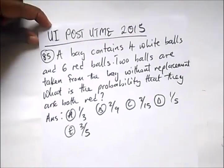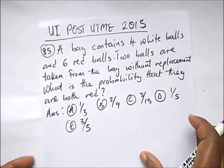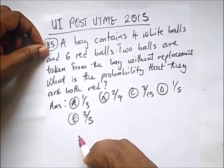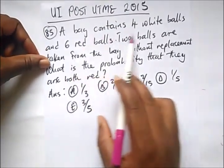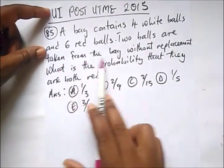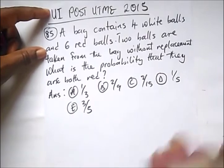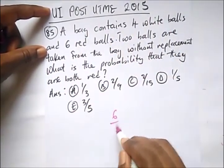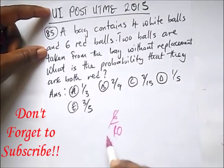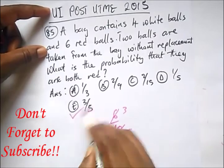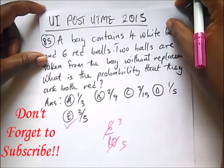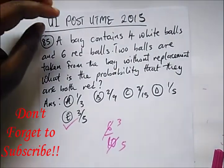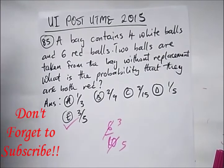I think this is our final question. Next time, by God's grace, I'm going to take more past questions on University of Ibadan post-UME. A bag contains 4 white balls and 6 red balls. 2 balls are taken from the bag without replacement. What's the probability that they are both red balls? There are 6 red balls out of 10 total, so 6/10 = 3/5. Our answer is option E. I've treated probability — try to watch that video. Thank you for staying tuned to Destined to Win Tutorials. Please like, share, and subscribe. You are destined to win. I wish you success in your exams. Bye for now.